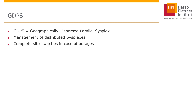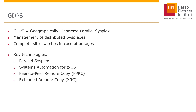In this case we can have complete site switches in case of outages without affecting transactions that are running. The key technologies in place are Parallel Sysplex, which we just talked about, and Systems Automation for z/OS. There are also two products or possibilities available to synchronize all the data, because if you want high availability with GDPS we have to synchronize the data across the computer centers taking part in such a GDPS configuration.